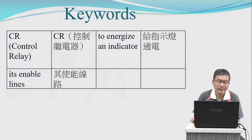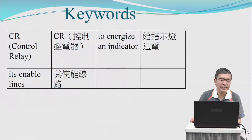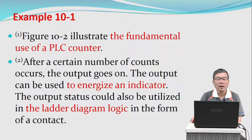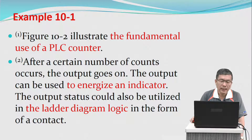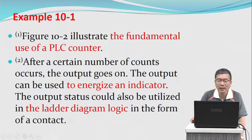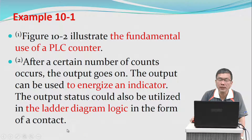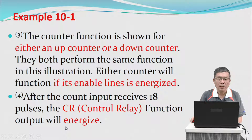A control relay to energize an indicator is enabled. Figure 10.2 illustrates the fundamental use of a PLC counter. After a certain number of counts occurs, the output goes on. The output can be used to energize an indicator, and the output status could also be utilized in the ladder diagram logic in the form of a contact.